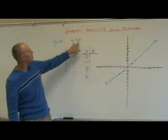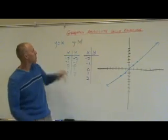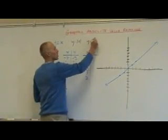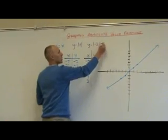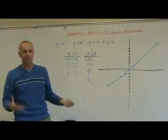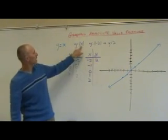And immediately, we look at this and say negative 2. If x is negative 2, well, the absolute value of negative 2 is 2. So y equals 2.